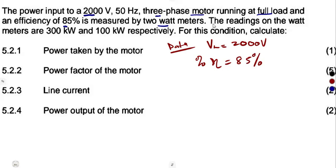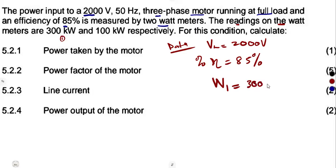The power is measured by two watt meters. The readings on the watt meters are respectively: watt meter one is 300 kilowatts, and the second one is 100 kilowatts. You can take them in either order — the way you choose does not affect the result. As you can see, we are not told there was a reversal, so these values remain positive as they are.